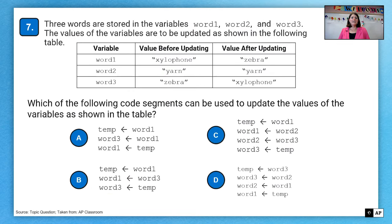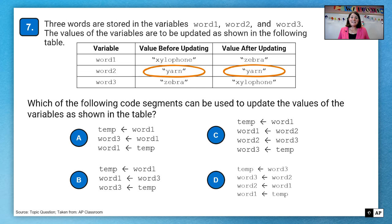Question number seven. Three words are stored in the variables word1, word2, and word3. The values of the variables are to be updated as shown in the following table. So you see we have word1, word2, word3. Notice their value before and the value after. So looking at this, word2 doesn't change. So I can quickly determine which of the following code segments or eliminate some of the following code segments that need to update the values as shown. So word2 doesn't change. Therefore, it means I don't need to mess with word2. So I can eliminate choices C and D.